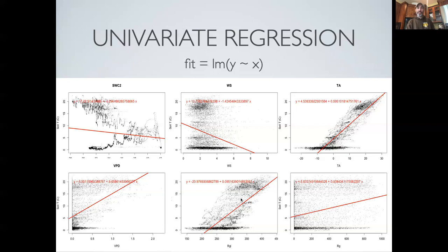We can see some of these, like air temperature and wind speed, that seem sensible. We see others, like soil water content, where the best fit line seems like it might be violating the assumptions of linear models — the best fit line goes between two clouds of data and not through either. The variance is also higher on the low end than on the high end, which would be worrisome.